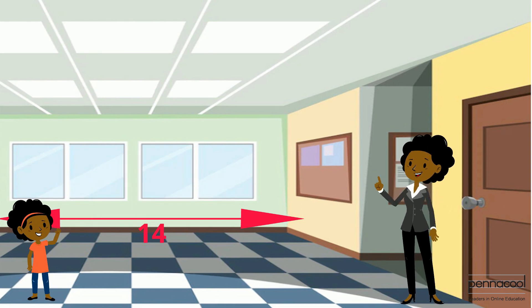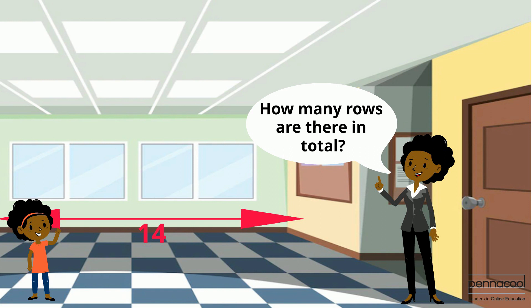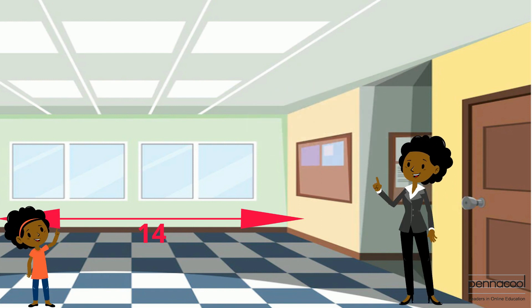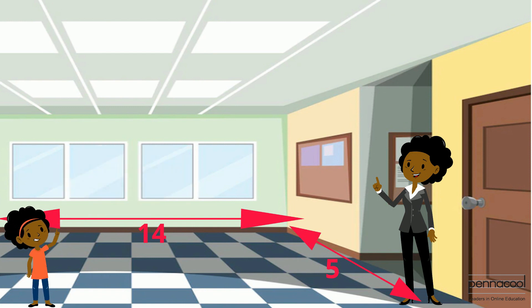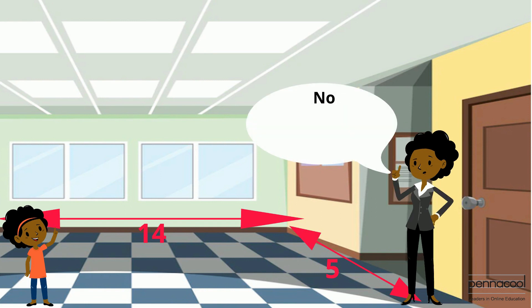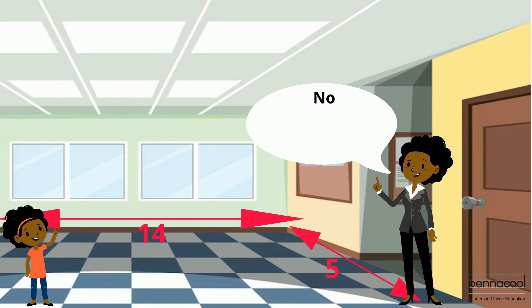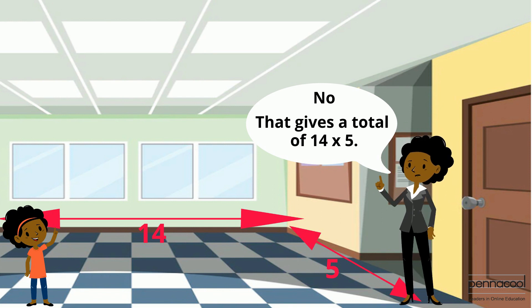'Great! But how many rows are there in total?' Janice counts and sees that there are four rows of 14 square tiles. She asks, 'Miss, does that mean that there are 14 plus 5 square tiles?' Mrs. Rambali tells Janice no — there are five rows, each made up of 14 square tiles, giving a total of 14 multiplied by 5.